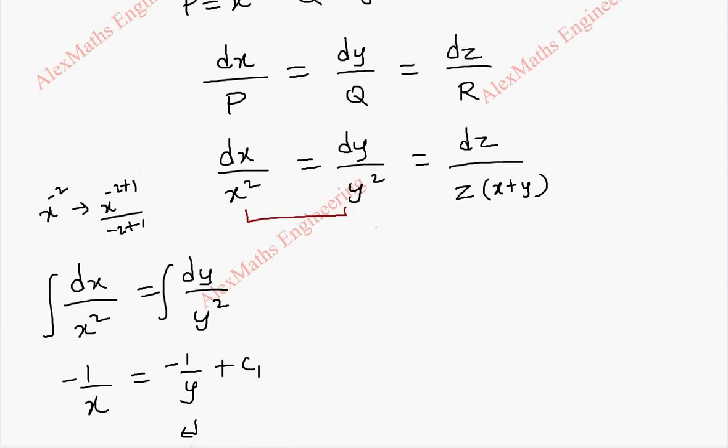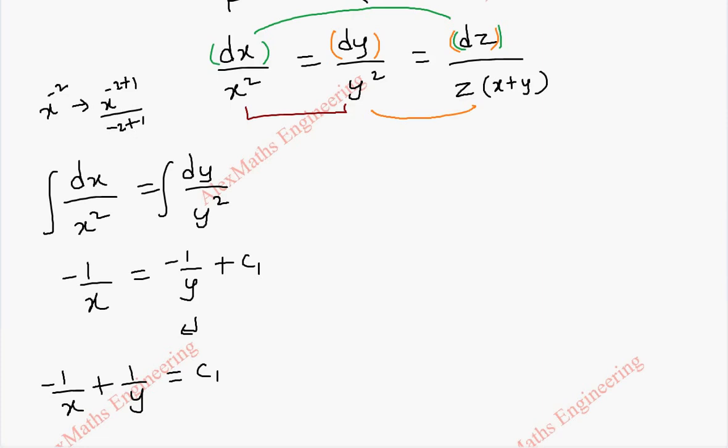Now, when I take these two we have only dy and dz but we have x terms, very difficult to integrate. Or, when I take these two also we have dx and dz but we have y term, very difficult to integrate. So, we have to apply some ratio properties, that is the Lagrange Multiplier Method. What I can do is, already what we have is dx by x square and dy by y square.